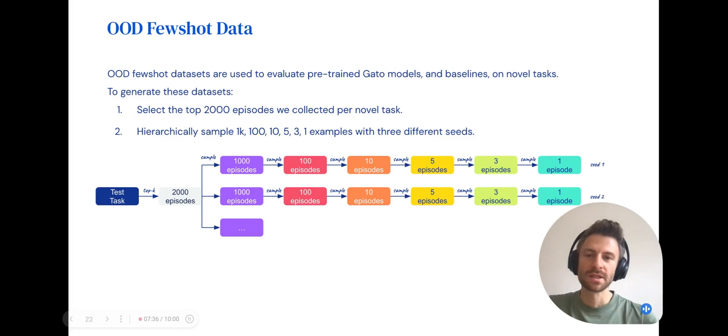We also constructed several out-of-distribution few-shot datasets for control tasks. To do so, we selected the best 2,000 episodes per out-of-distribution task. We then hierarchically subsampled 1,000, 100, 10, 5, 3, and 1 episodes from these 2,000 using three distinct seeds. This hierarchical subsampling ensures that, for a single seed, all episodes in a smaller subset will be present in the larger sets. I'll now pass off to Jackie, who will discuss our results.